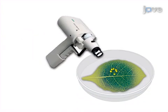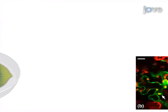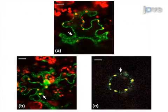Ultimately, imaging of the tobacco leaf by confocal microscopy reveals GFP expression in the chloroplast and peroxisome.